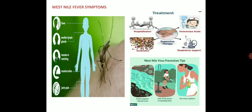For treatment, there is no certain vaccine for this disease; only supportive therapy which includes hospitalization, antibiotics, respiratory support and intravenous fluids. For prevention: avoid mosquito-infested areas, clear living spaces of standing water and use insect repellent. By doing all this, you can control the insect vector.